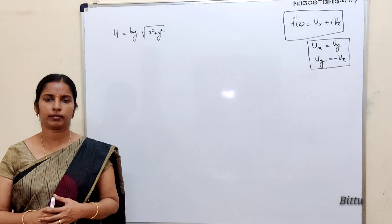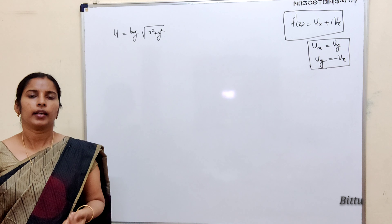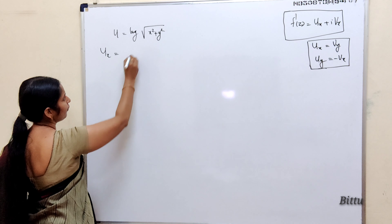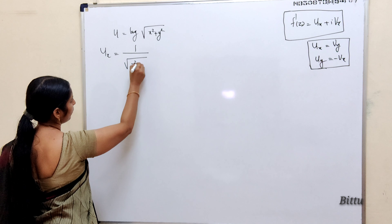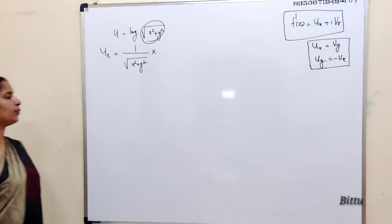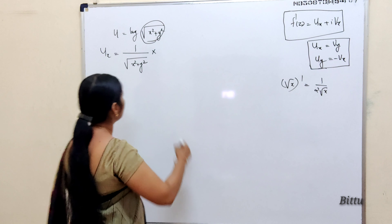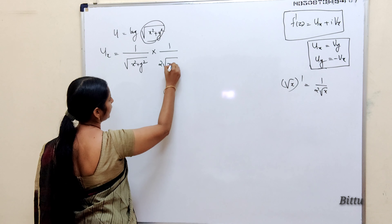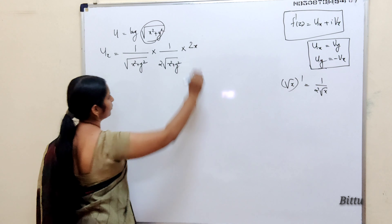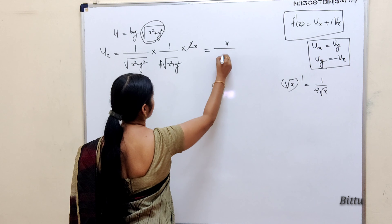Here u = log√(x² + y²). As usual we find ∂u/∂x and ∂u/∂y. For ∂u/∂x: derivative of log(x) is 1/x, so 1/(√(x²+y²)) multiplied by the derivative of √(x²+y²) with respect to x. Derivative of √x is 1/(2√x), so it is 1/(2√(x²+y²)) times the derivative of (x²+y²) with respect to x, which is 2x. This simplifies to x/(x²+y²).